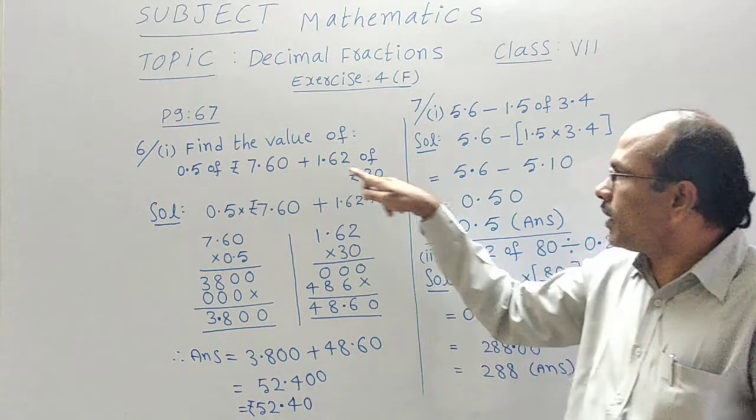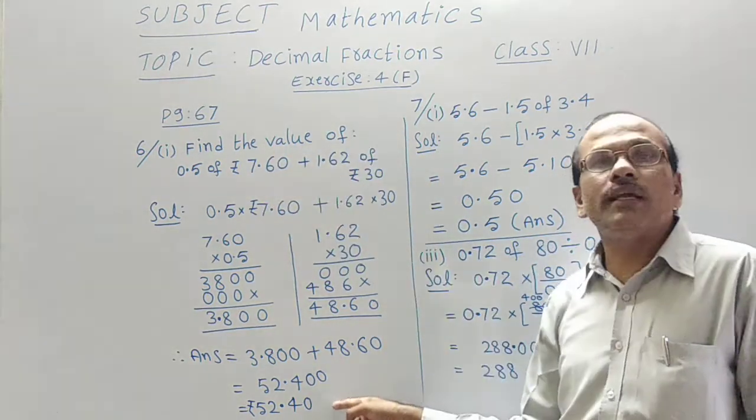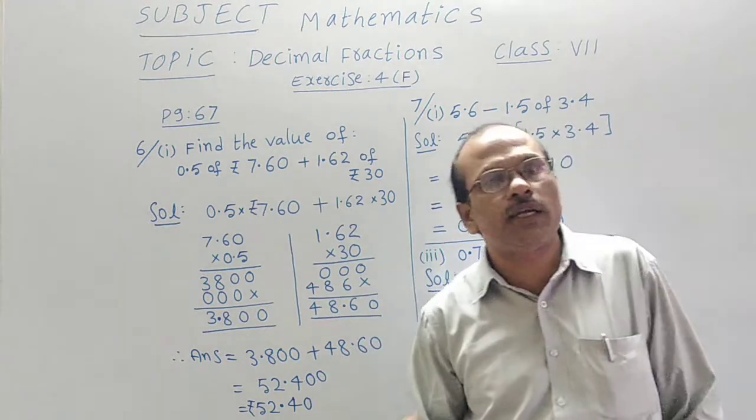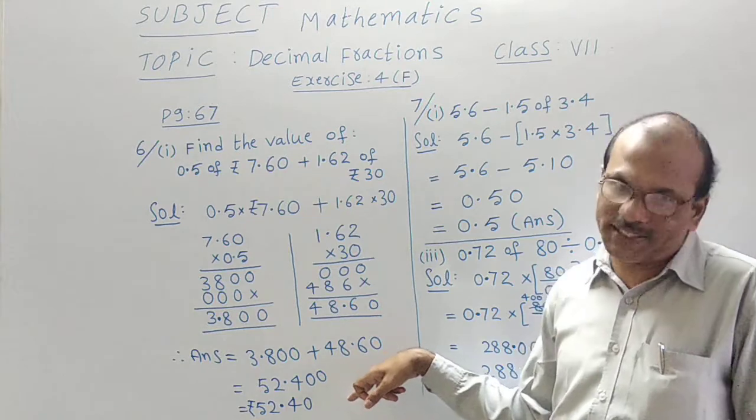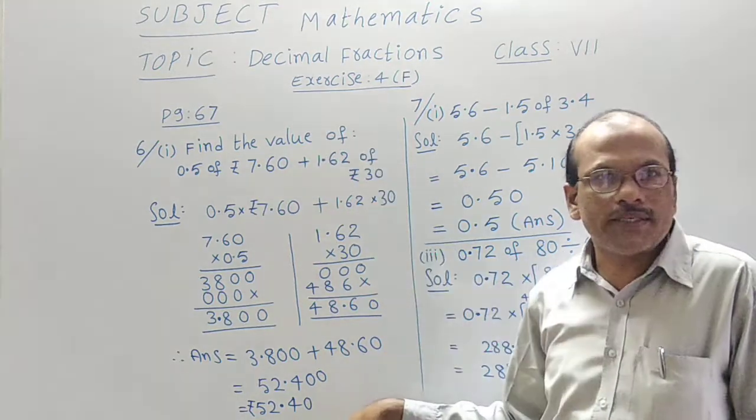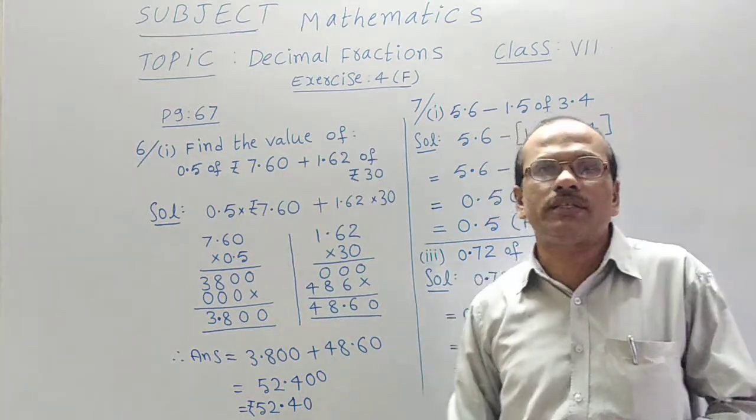Here rupees there, here also rupees there. So rupees and rupees if we add, finally we will get money only, that is in rupees, called 52 rupees and 40 paise. Is it clear students? Just simplification. Finally we are getting the value of it.